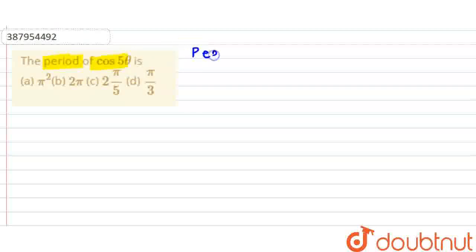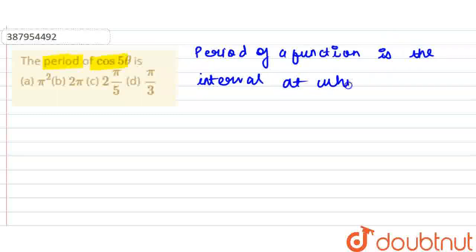Let's define the period. The period of a function is the interval at which the function returns to the same value.